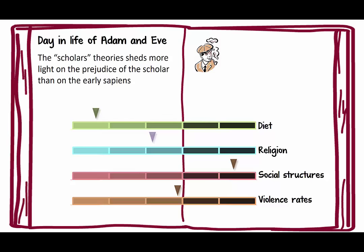As far as diet goes, we go from one part of the spectrum to the other. The same thing with religion — the importance of it and where it was — social structures, violence rates. It goes up and down the board, so we don't really know what it was like for the early sapiens. Everything is really just speculation.